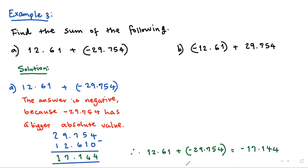Do you understand why our answer is negative? Because negative 29.754 has the bigger absolute value — that's why. Because 29.754 being negative, our answer will be negative.